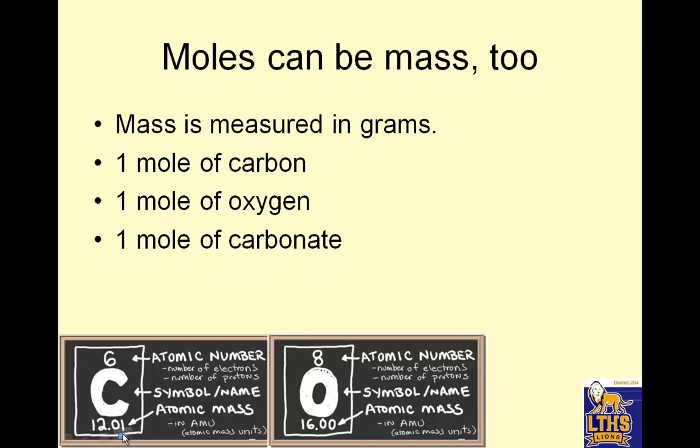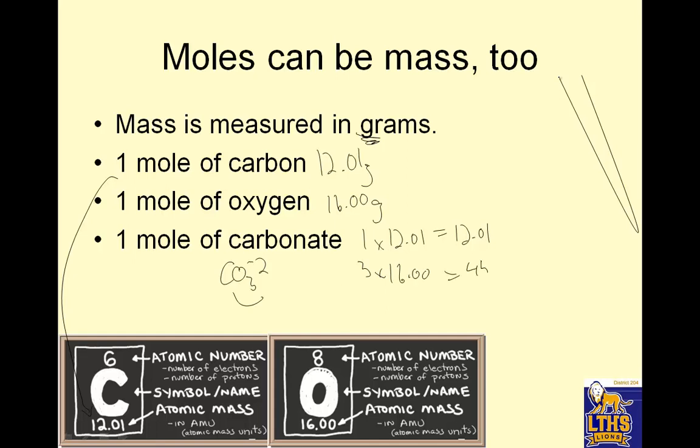Moles can be mass, too. Mass is measured in grams. I say that little g stands for grams for mass, and it stands for go to the periodic table. On most periodic tables, the atomic mass is at the bottom. 1 mole of carbon, if I want to know the mass, is 12.01 grams. And I do want you to pull two decimal places. 1 mole of oxygen is 16.00 grams. 1 mole of carbonate, CO3-2, would be one carbon and three oxygens. I add those together, that's 60.01 grams per mole.